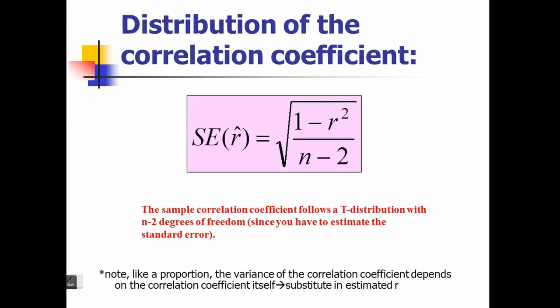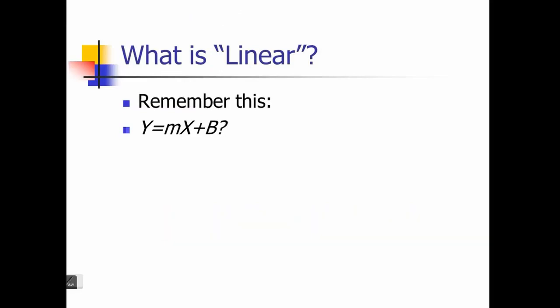Now here is a bit about linear regression. Linear regression takes some of the basic motivation from correlation and also tries to find out the relationship between two or more variables. While correlation is most often between two variables, linear regression can include more than two variables. In linear regression, you have a dependent variable and a set of independent variables — there is no such concept in correlation.